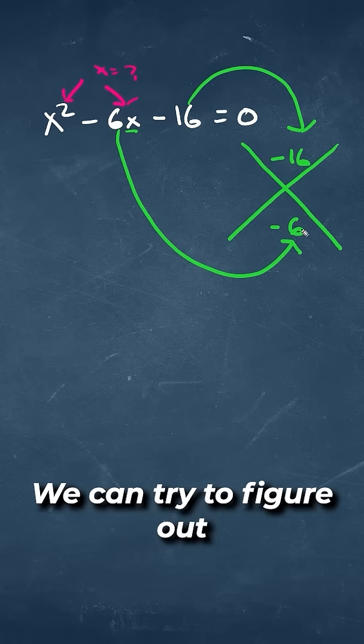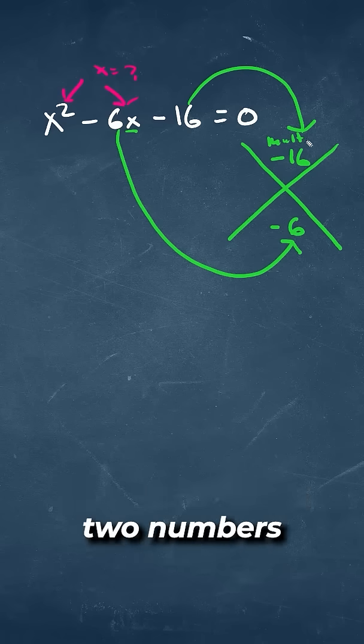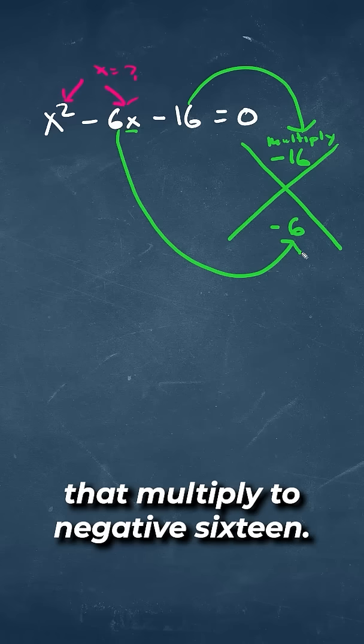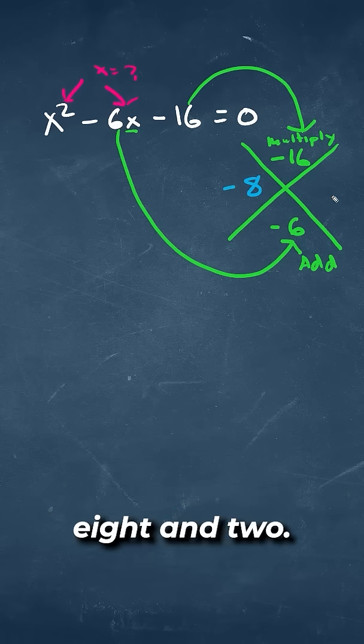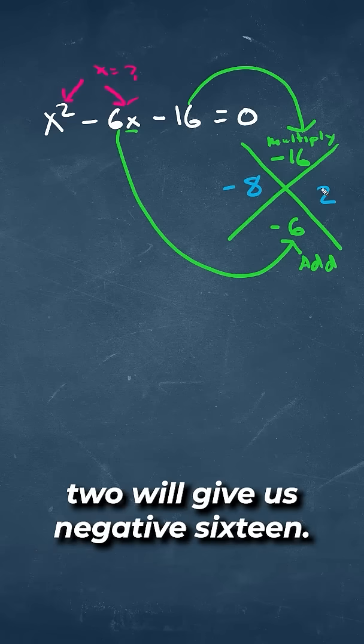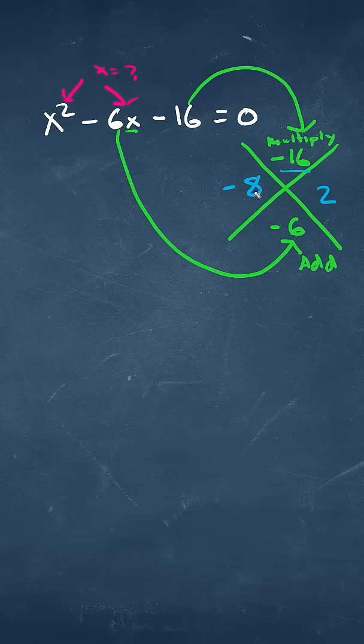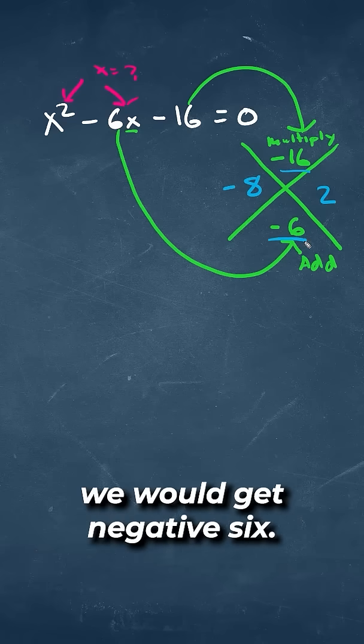And put it in the bottom here. We can try to figure out two numbers that multiply to -16 but add to -6. Those two values are -8 and 2. -8 times 2 will give us -16. If we add those two values, we would get -6.